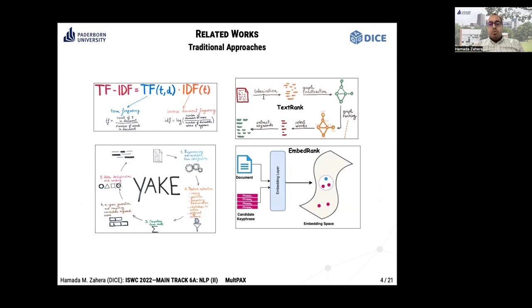We can also use TextRank to construct a graph from the input document in which nodes correspond to keyphrases. We rank these nodes using a ranking algorithm like PageRank to find the top keyphrases. There is also a statistical approach called YAC which computes keyphrases based on word keywords.